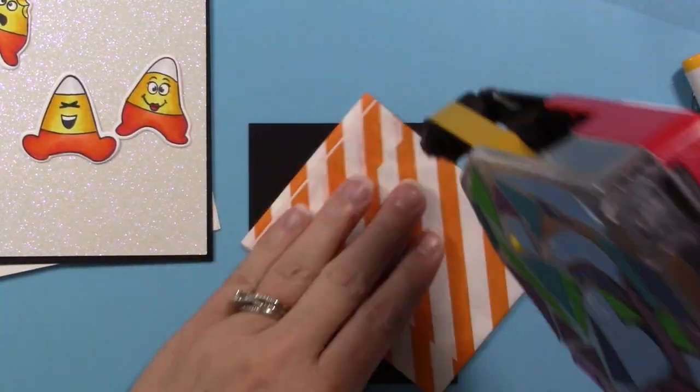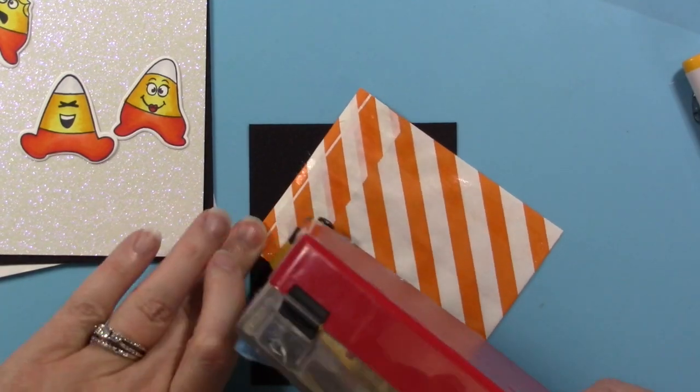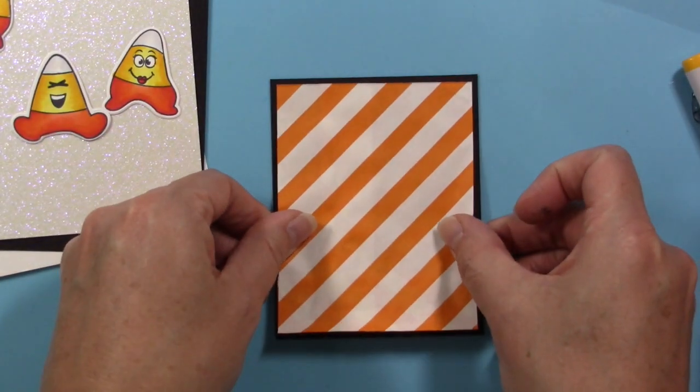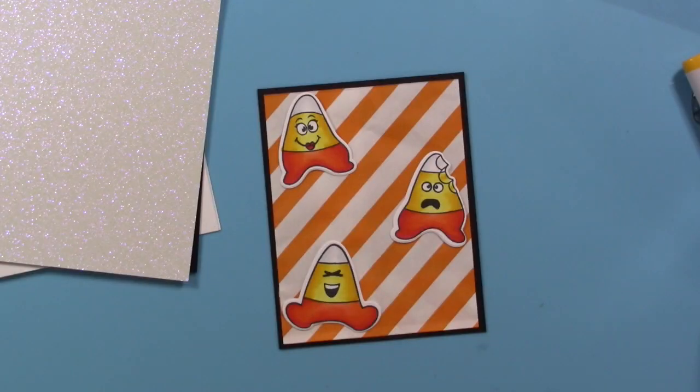I use my tape runner and add some tape to the back of this little envelope, then attach that to the little piece of black cardstock that I cut out. Then I'll go ahead and adhere my little candy corns.